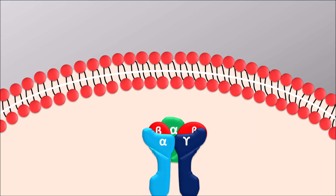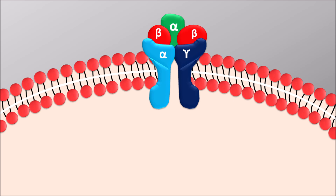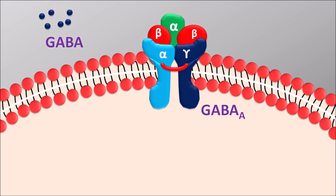Within the CNS, GABA-A receptors are expressed which are pentameric in nature, made up of five subunits — among them alpha, beta, and gamma subunits are mostly predominant. These GABA-A receptors are ionotropic in nature, meaning they are made up of ion channels. Under resting conditions these ion channels are closed. In order to activate these ion channels, GABA is required, which is an inhibitory amino acid transmitter within the CNS. When the GABAergic transmission increases it produces CNS inhibition, which reduces anxiety, irritability, tension and agitation.